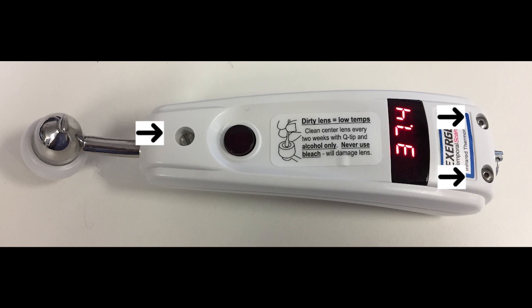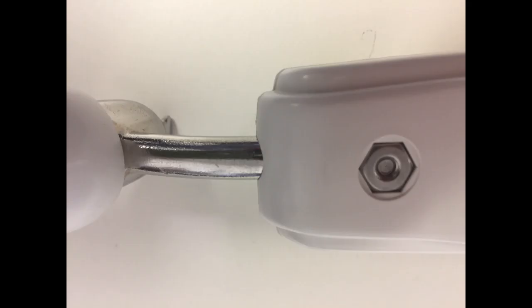So we are going to look at disassembling and replacing the case in this video. So there are three screws, one at the top and two at the bottom. The top one is sometimes covered by a sticker.